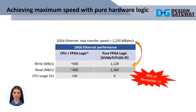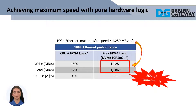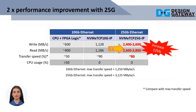As you can see from the table, traditional solutions normally consume CPU usage more than 50% and achieve performance just around 60%. These solutions can achieve close to maximum performance of 10G and 25G Ethernet speed with 0% CPU usage. Comparing with maximum transfer speed, NVMe TCP 25G can achieve more than 2x performance improvement over 10G.